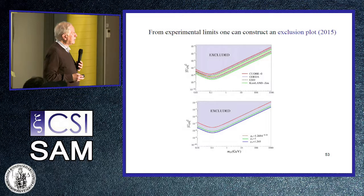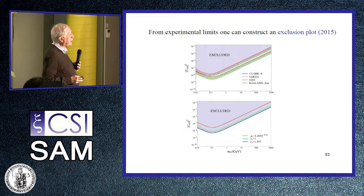The excluded region depends on both the mass and the coupling to electron neutrinos. Unfortunately, the situation is worse if we include the renormalization of GA — the quenching. The three curves are for GA equal to 1.269, GA equal to 1, and maximal quenching. We still have about an order of magnitude of uncertainty from this effect.